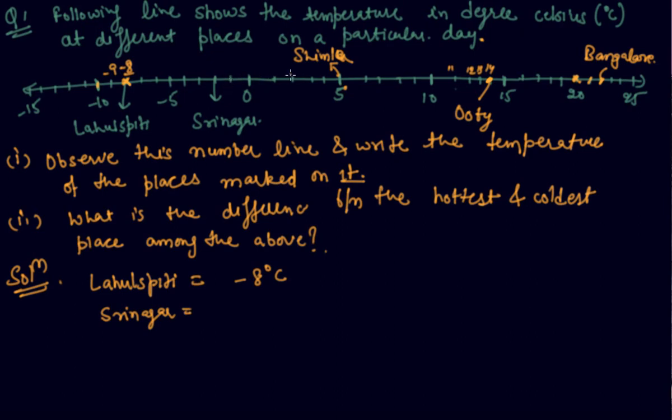Now comes Srinagar. The temperature here would be, it is 0, this is -1, so this would be -2. The temperature in Srinagar would be -2 degrees Celsius. And what about Shimla? Shimla is written over here, so the temperature in Shimla will be 5 degrees Celsius.